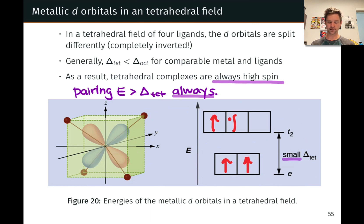For example, in a d⁴ case, we'd end up with a complex like this, rather than pairing like so. So we always end up with high spin complexes with a relatively large number of unpaired electrons in the tetrahedral case.